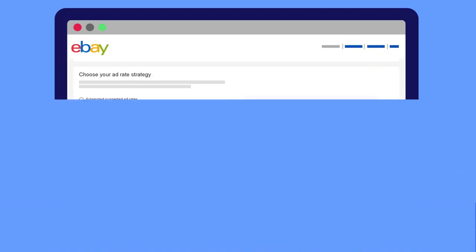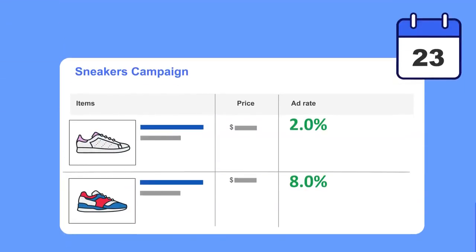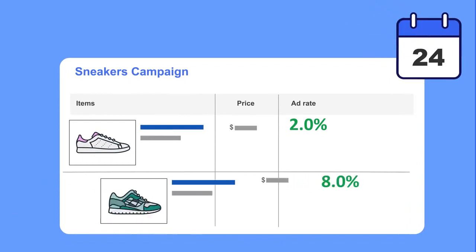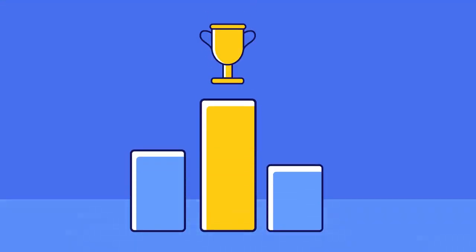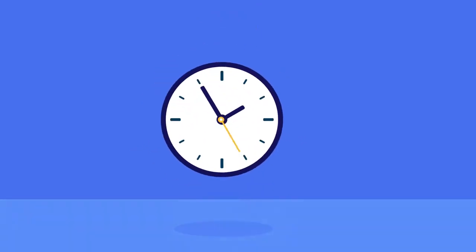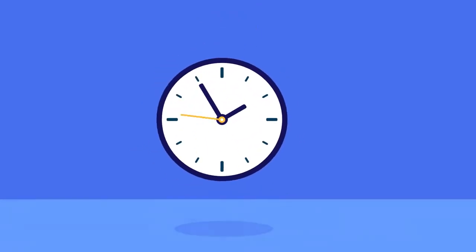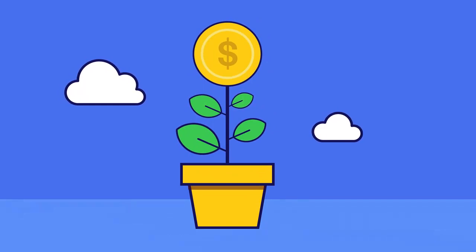After launch, we'll automatically add or remove current and future listings according to the rules you set. Automated campaigns help you stay competitive and save you valuable time and energy while still giving you the controls you need to meet your business goals.